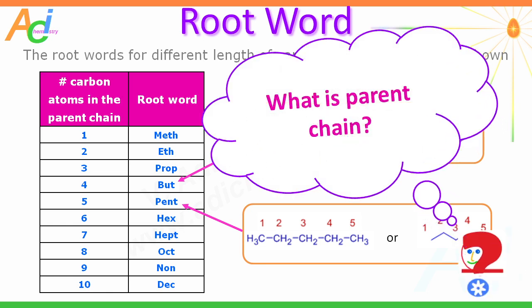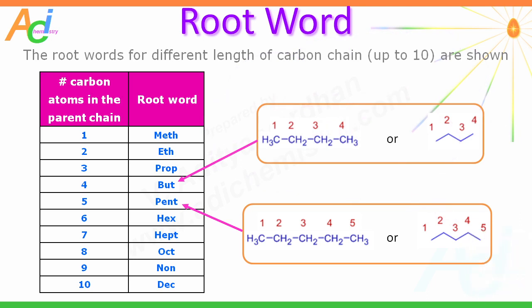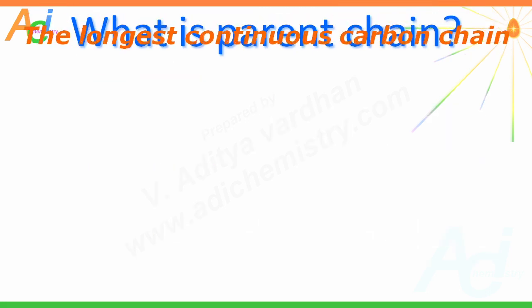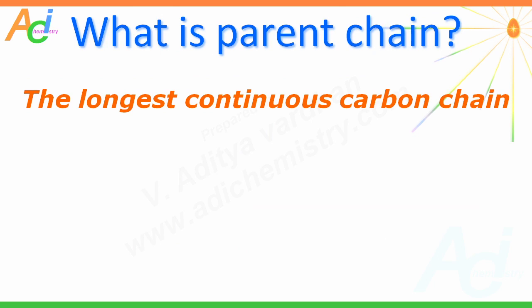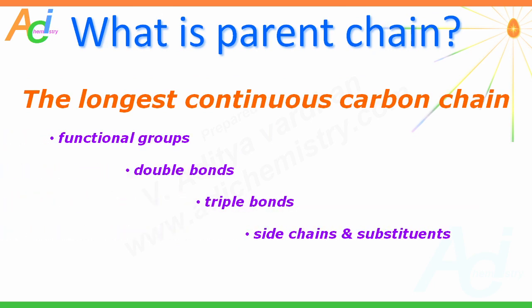Here is Mr. Weiss, who represents you and will ask questions on your behalf. His question is: what is a parent chain? A parent chain is the longest continuous carbon chain containing as many functional groups, double bonds, triple bonds, side chains, and substituents as possible. You will learn the details of how to select a parent chain in the next part of this lecture series.